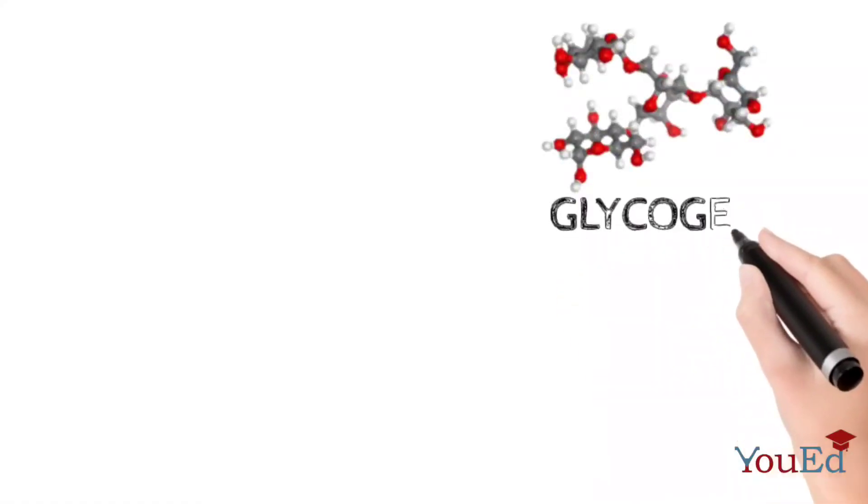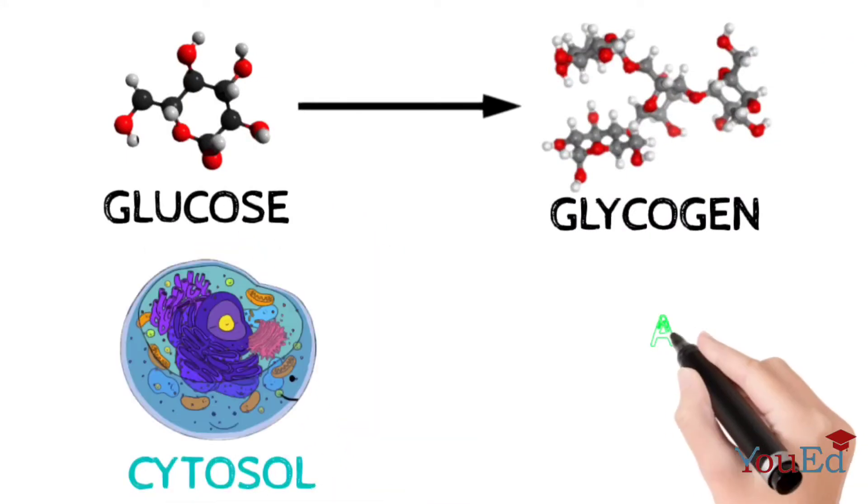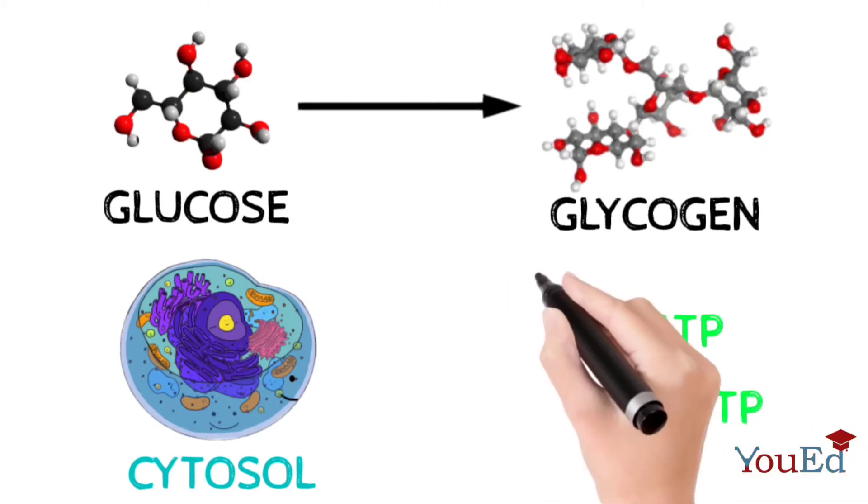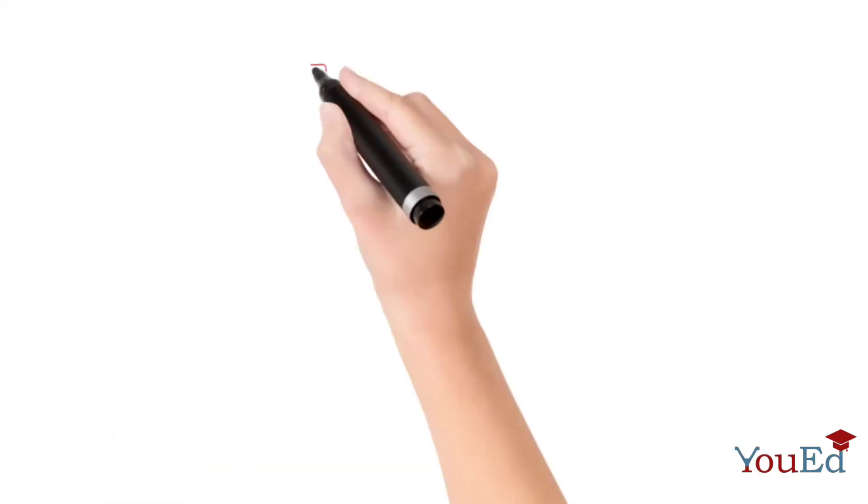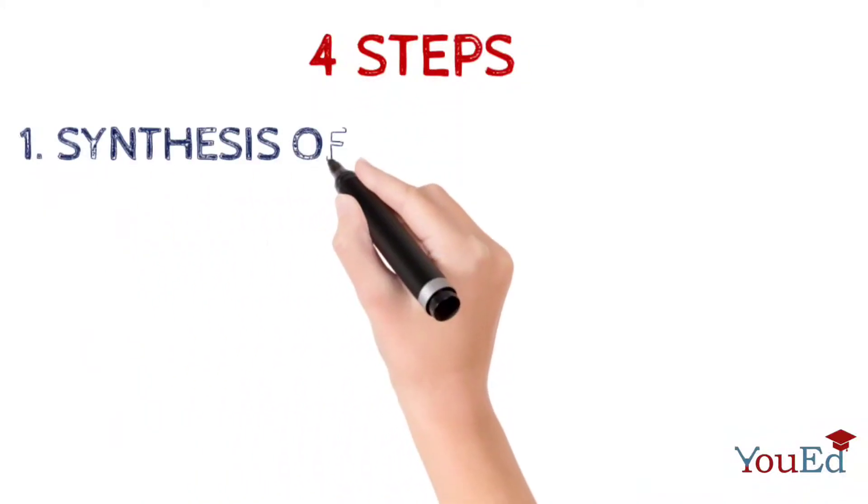Glucose is not stored in its original form but is converted into glycogen. The synthesis of glycogen from glucose is called glycogenesis, which occurs in the cytosol and requires ATP and UTP as energy.